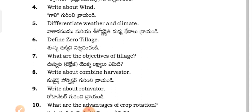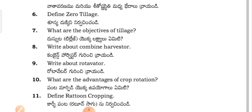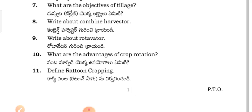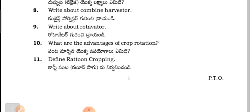The objectives of the tillage — Dunnut tillage ecological unity. Write about combine harvester — Combine harvester kuri nirvachin channdi. Write about rotavator — Rotavator kuri nirvachin channdi.